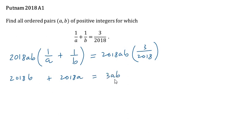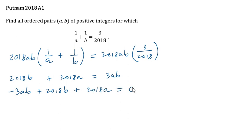I will gather all terms on the left-hand side, so we obtain −3AB + 2018B + 2018A = 0. I would like to have a positive leading coefficient, so I'll multiply both sides by −1 to obtain 3AB − 2018B − 2018A = 0.